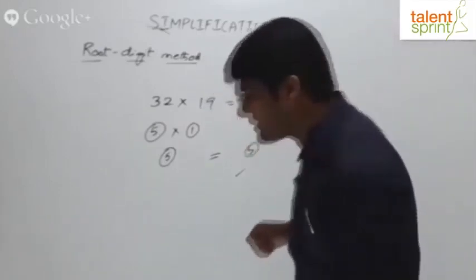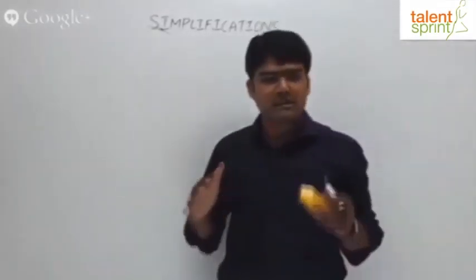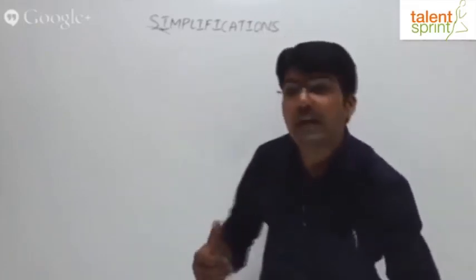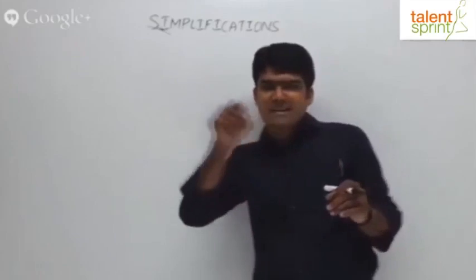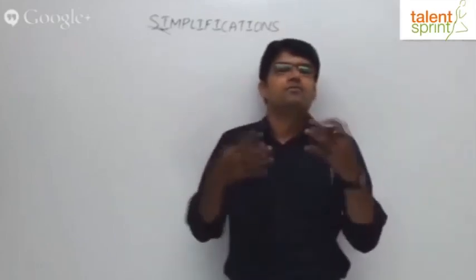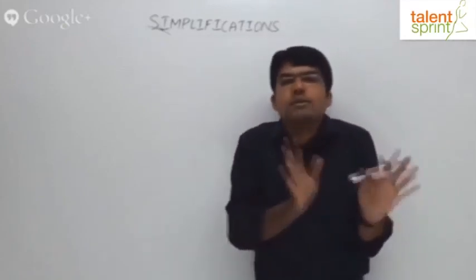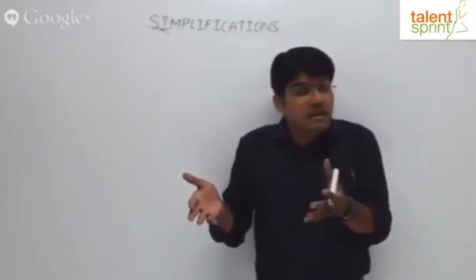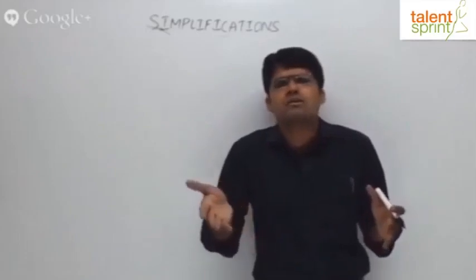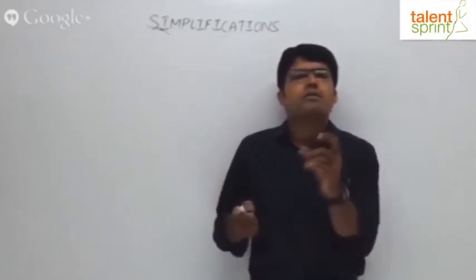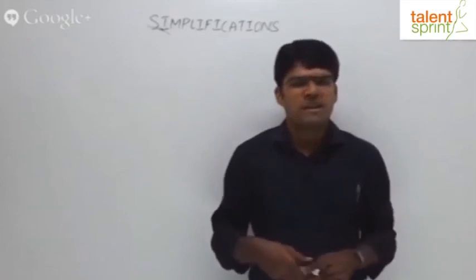If you ask me which is better — unit-digit method or root-digit method — my clear answer is unit-digit method. Root-digit appears interesting but takes more time. In unit-digit, you just check the last digits. With root-digit, you keep adding until you get a single digit. So first apply unit-digit; if that fails, try root-digit. Even root-digit may fail if multiple options satisfy it.